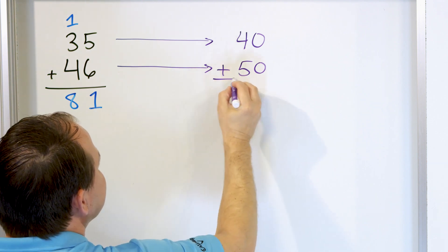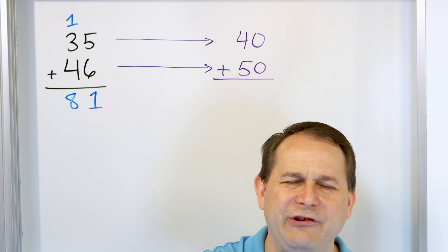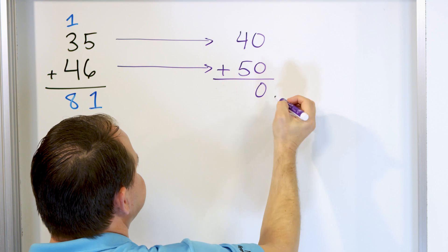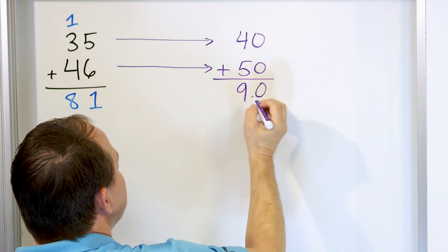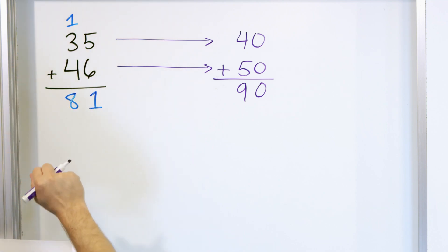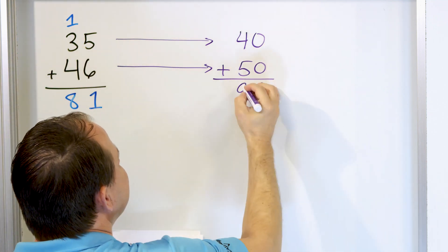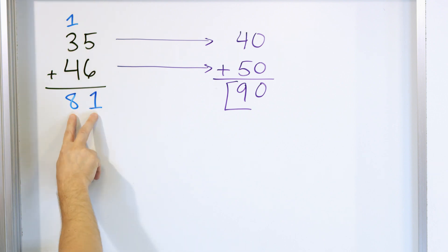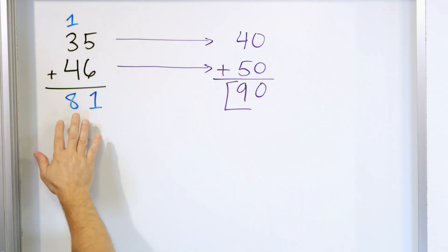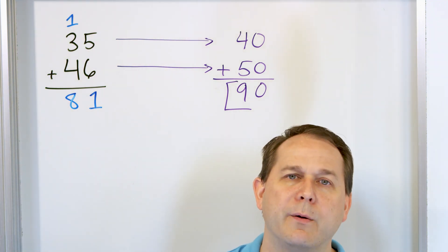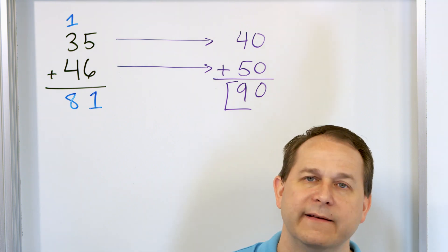These rounded versions — look how easy it is to add them. Zero plus zero is zero, five plus four is nine. So if we're asking to estimate the sum, the first thing you do is round them, the second thing you do is add them up, and the estimate is 90. The real answer is actually 81 — that's kind of close to 90, but not exactly the same. That's okay, because an estimate is just to give you a ballpark idea of what the answer is.